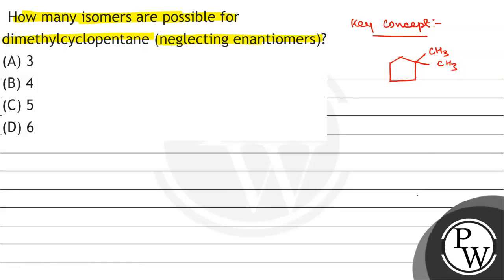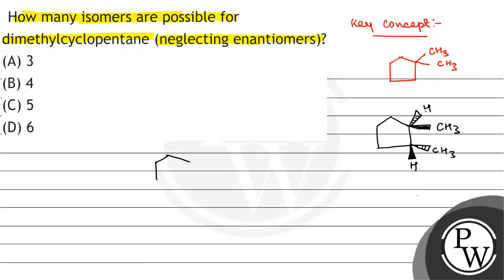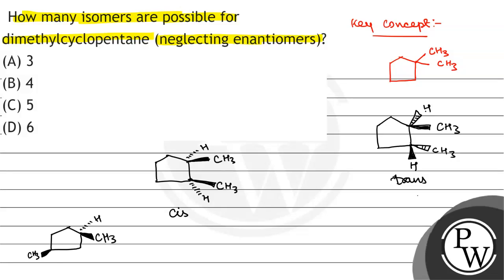So this is the first isomer. The second isomer will have both groups in the same plane — one CH3 pointing down. Then either CH3 is in the downward plane with H up the plane, or CH3 is up the plane with H down the plane, or CH3 up the plane and H in the downward plane.